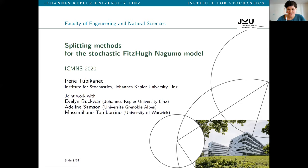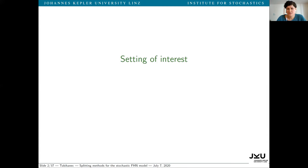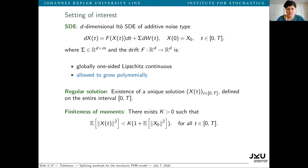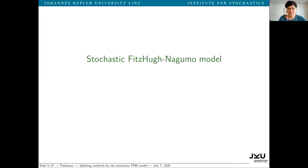Let me start by introducing our setting of interest. It's a setting which contains the stochastic Fitz-Yunagumo model. We are looking at multidimensional additive noise stochastic differential equations where the drift is non-globally Lipschitz continuous, but fulfills a one-sided Lipschitz condition and is allowed to grow polynomially, as required in many applications and for the FHN model. These conditions guarantee the existence of a unique strong solution process defined on the entire time interval and the finiteness of the moments of the solution.